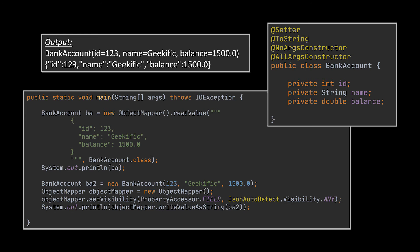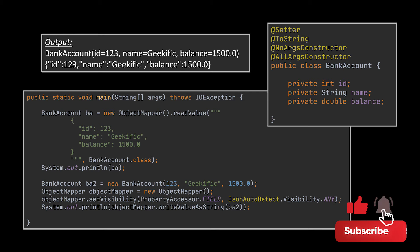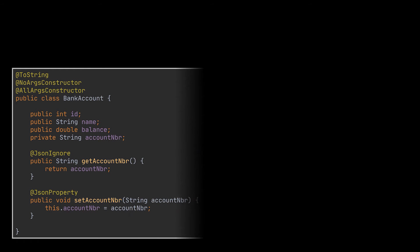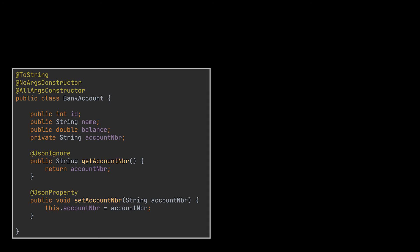In some cases you might not actually be able to modify the source code directly, so we need to configure the way Jackson deals with non-public fields from the outside. That kind of global configuration can be done at the ObjectMapper level by turning on the auto-detect functionality to use either public fields or getter/setter methods for serialization, or by turning on serialization for all fields.